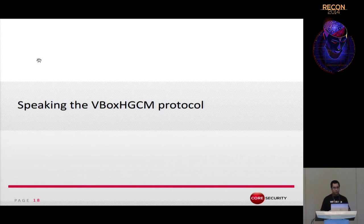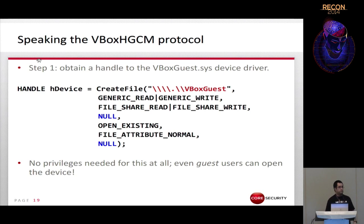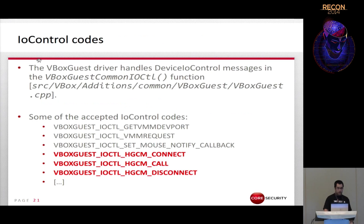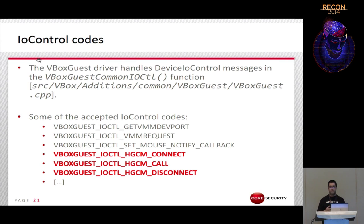To speak the bbox HGCM protocol from the guest side, the first step is obtaining a handle to the bbox guest driver by calling CreateFile — no special privilege is required. The second step is sending a message to the driver using DeviceIoControl. The driver supports many I/O controls, but we focus on three highlighted ones: HGCM Connect, HGCM Call, and HGCM Disconnect.